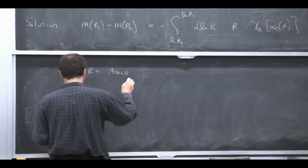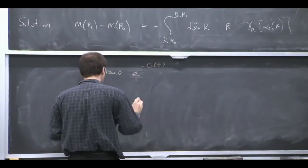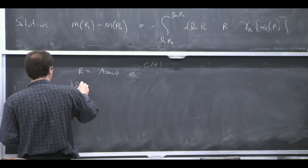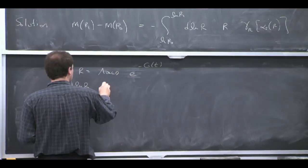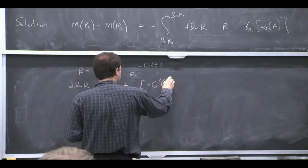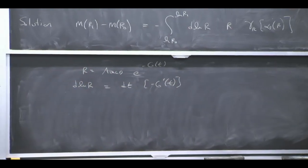From what we just talked about, R is equal to lambda QCD e to the minus G of T. And we can also therefore write that D log R is, from this formula, DT minus G prime of T. If we follow that through as a change of variable, that's the change of variable we get. So let's switch variable from R to DT.